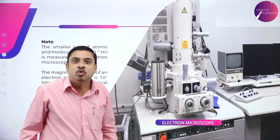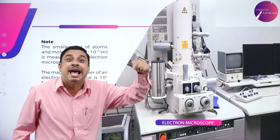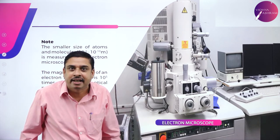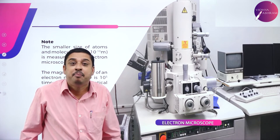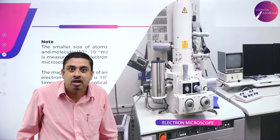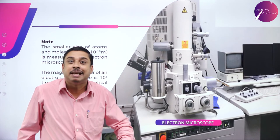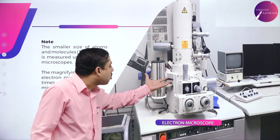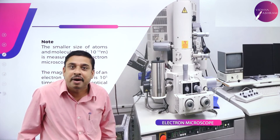If I am using beam of electrons instead of light, if I use beam of electrons to get the magnification done, then it is called electron microscope.